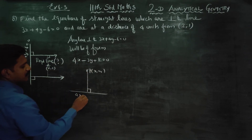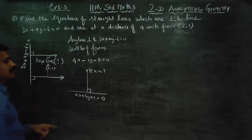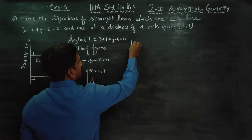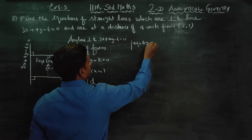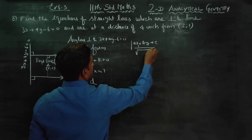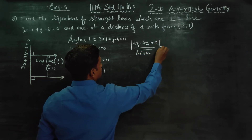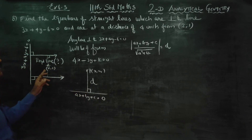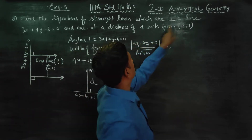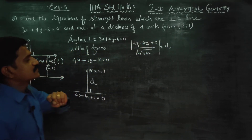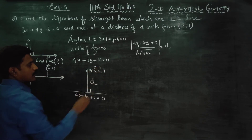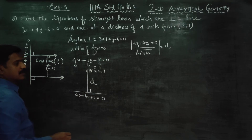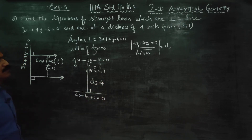The perpendicular distance formula is: distance = |ax₁ + by₁ + c| / √(a² + b²). This is the ready-made formula. The distance is 4 units from the point (2,1), so the point (x₁, y₁) is (2,1) and distance equals 4.